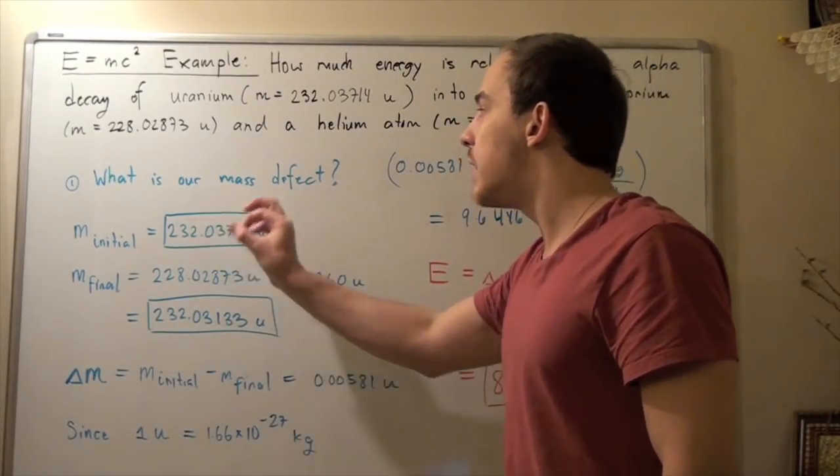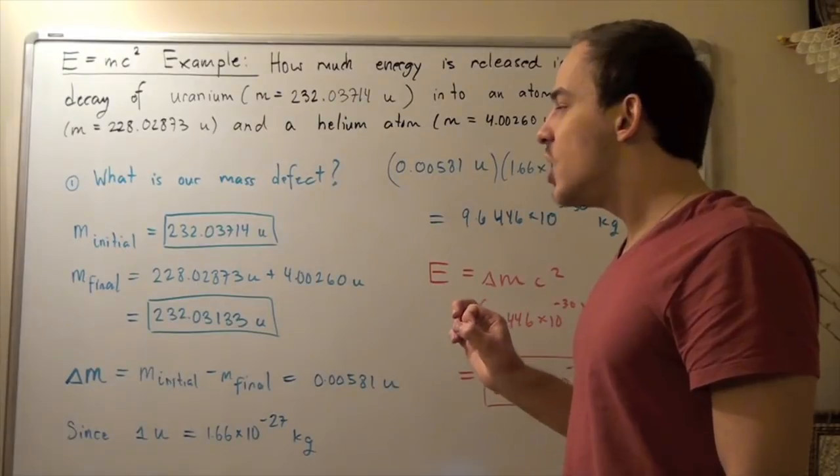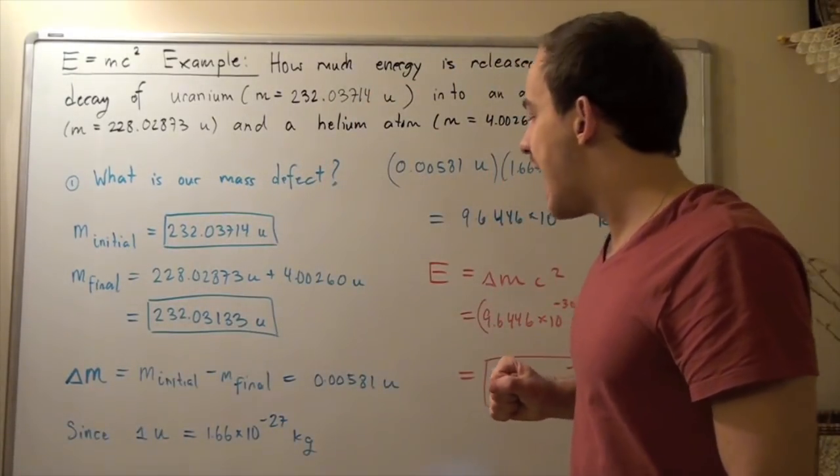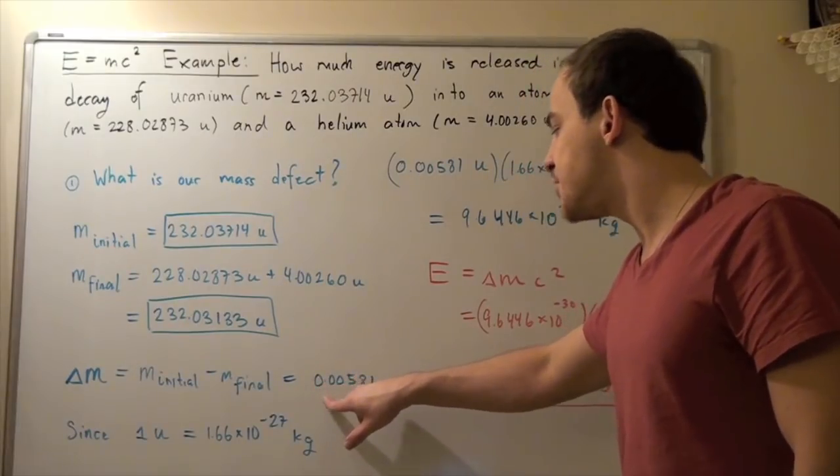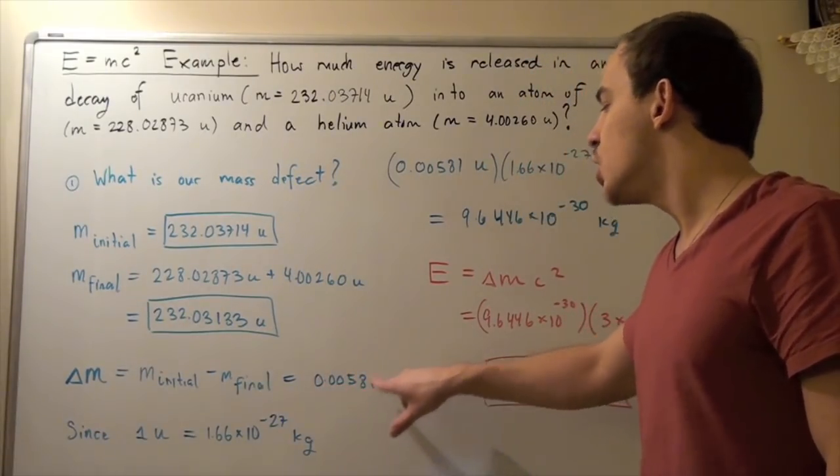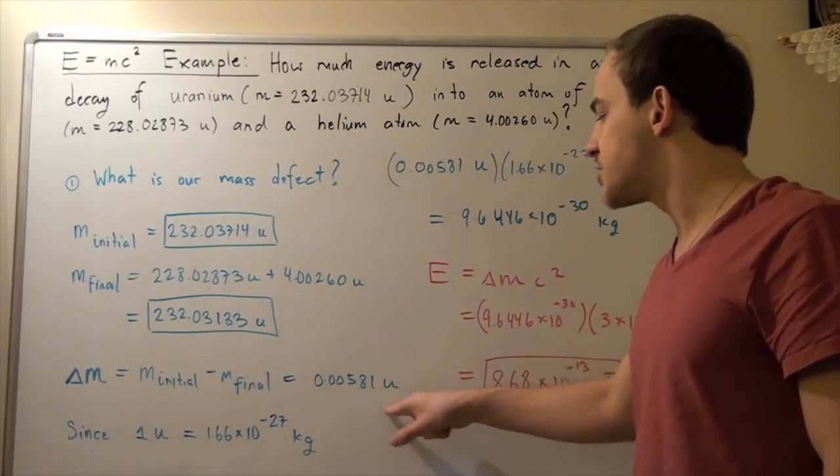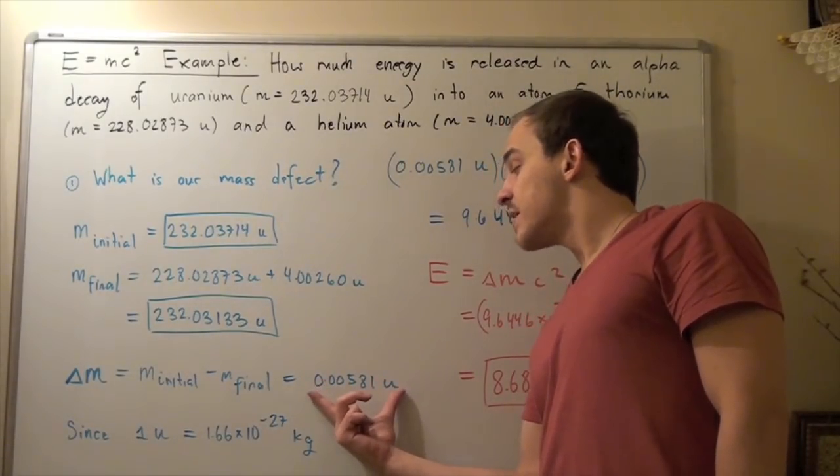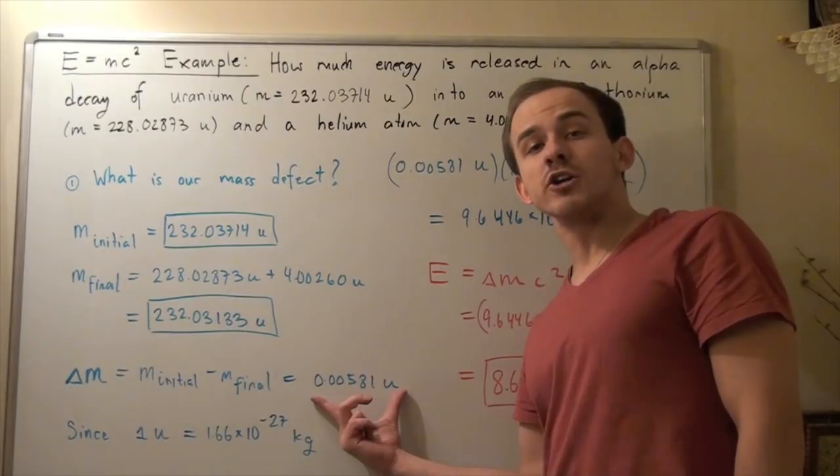And to find how much mass defect we have, we simply take the difference, we subtract the two, and we get 0.00581 unified atomic mass units. This is the discrepancy in mass. This is how much mass is converted into energy.